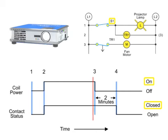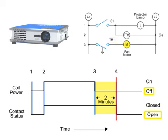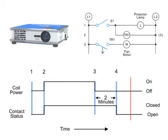When switch S1 is opened, the projector bulb turns off and power is removed from the timer. Contacts TR1 remain closed for a preset period of time and then open, causing the cooling fan to turn off. This off-delay timed open circuit is generally set to adequately cool the projector equipment before it shuts off.